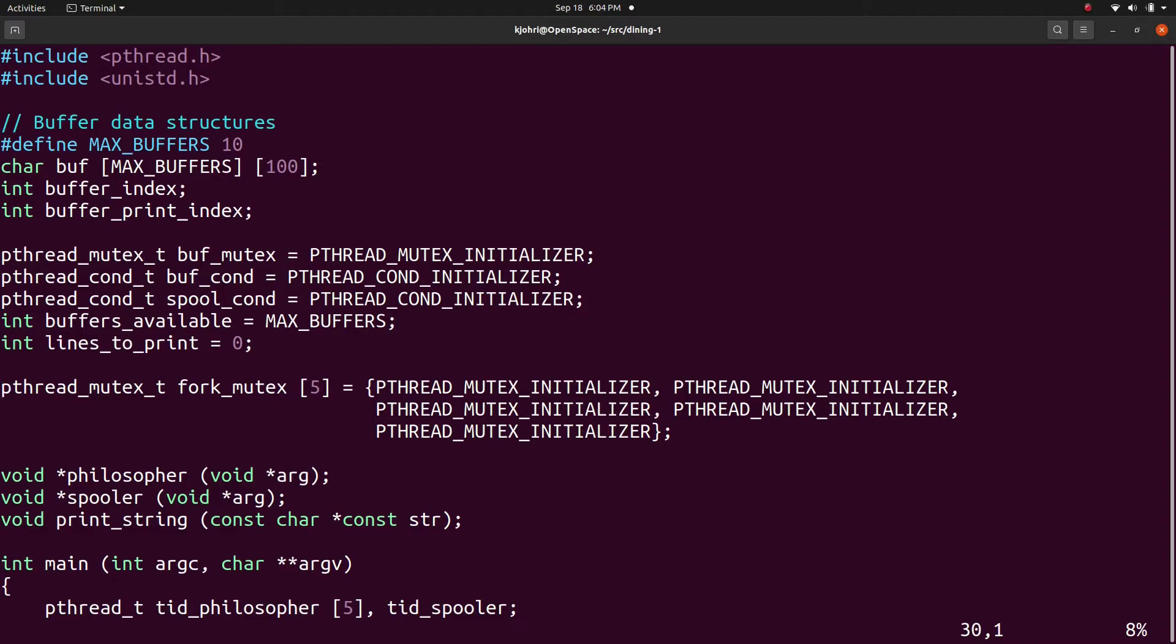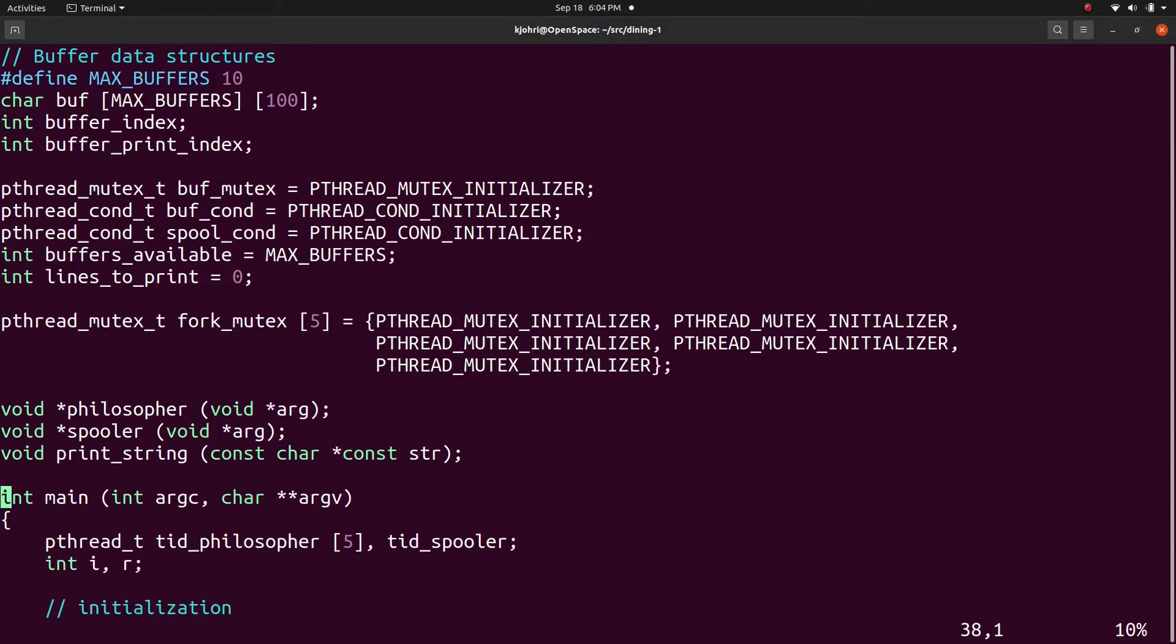Threads simply write messages in the buffers and the spooler reads the buffers and prints messages on the terminal. There are five forks and we have an array of five mutexes, one for each fork. To pick up a fork, a philosopher needs to acquire the corresponding mutex.